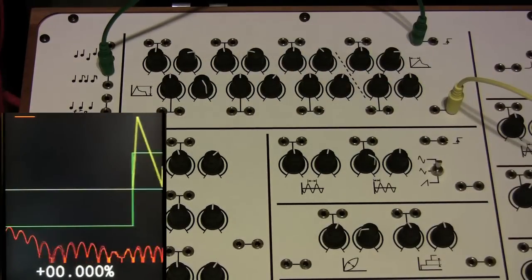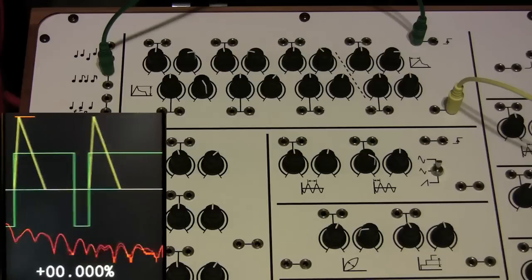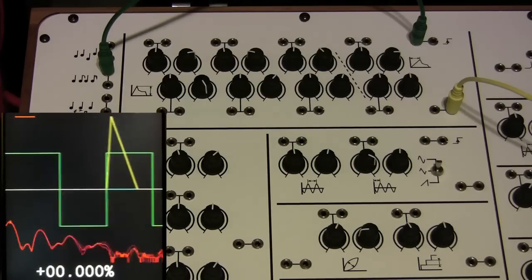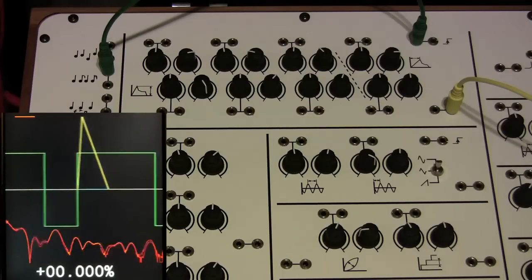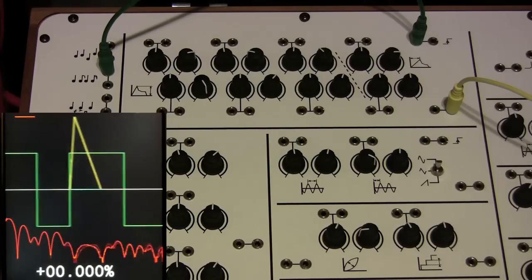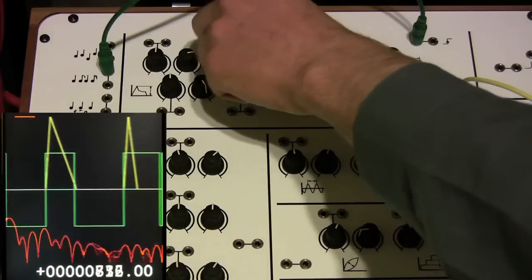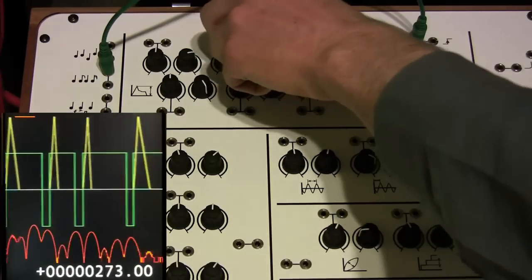Setting those back to zero again, we have the attack decay envelope. This has a fixed time, no matter how long the gate is held for. Adjustable with the rates here.